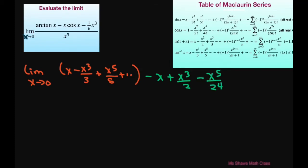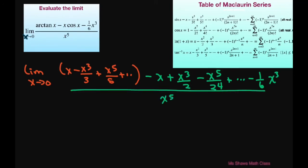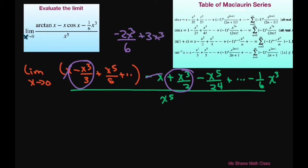So what we can cancel: we can cancel these two out, also these x cubed terms. If you look at these, the common denominator is 6, and if you get the common denominator that's going to be negative 2x cubed plus 3x cubed, so this is going to cancel out. So these are going to cancel out with this.